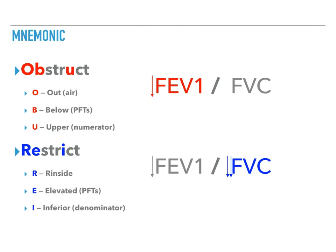In restrict, the R stands for rinside. It's harder to get air rin or inside. So the person can't really breathe in. The E stands for elevated. The PFTs are going to be elevated. This entire ratio is going to be elevated. And the reason is the inferior or denominator number. That's what the I stands for, the inferior number in this ratio. So think about it. You have a numerator divided by a smaller denominator. That gives you an increased ratio.